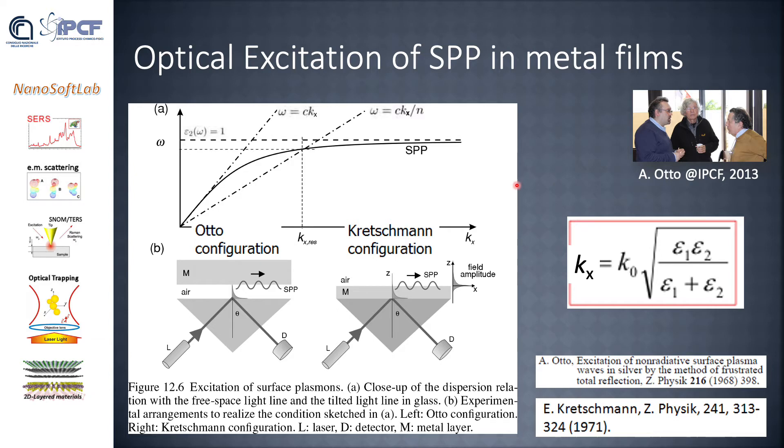In order to launch a surface plasmon polariton wave, two conditions must be fulfilled. The first is that the electric field must be in the plane. The second deals with the dispersion relation kx = k0√(ε1ε2/(ε1+ε2)), that is plotted here in this solid black line. As shown in the plot, the dispersion relation of a free propagating field doesn't touch the dispersion relation of the plasmon. This means that with a free propagating field we will never be able to couple light into the SPP wave.